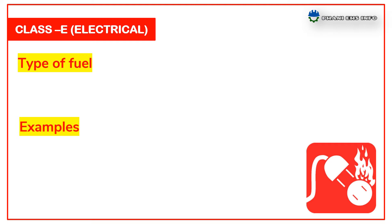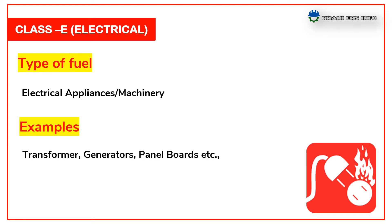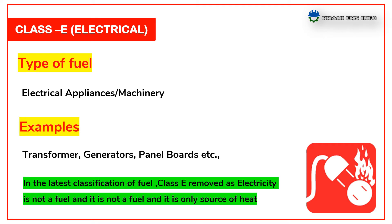Class E fires involve electrical appliances or machinery — transformers, generators, and panel boards, etc. In the latest classification of fuel, Class E has been removed, as electricity is not a fuel but only a source of heat.